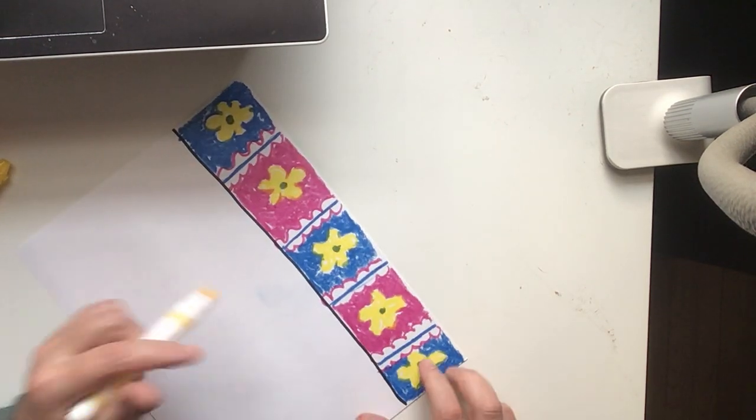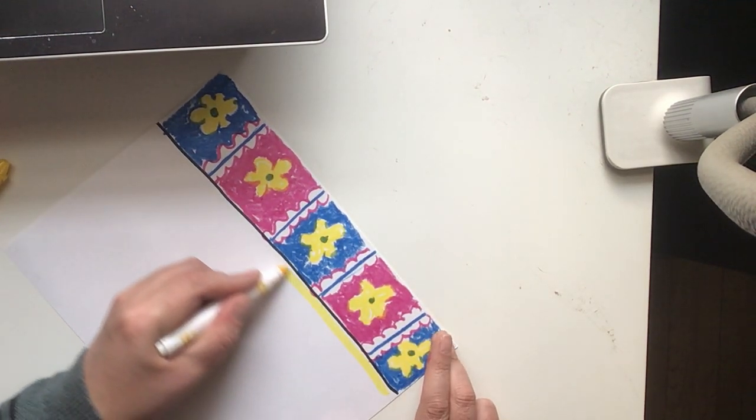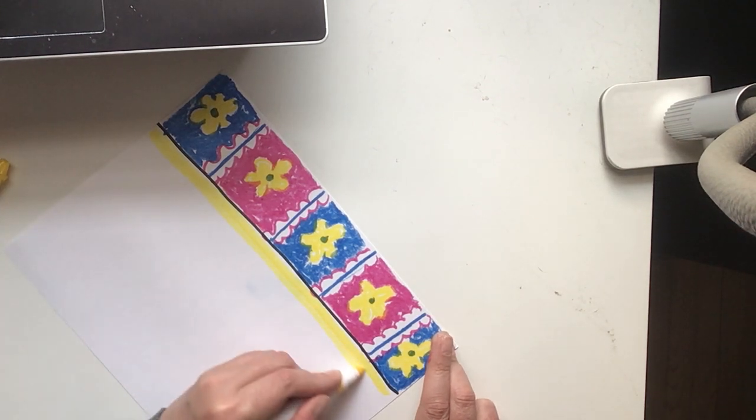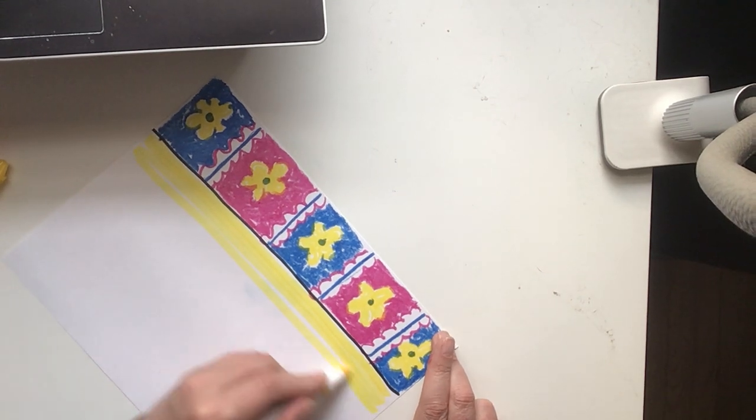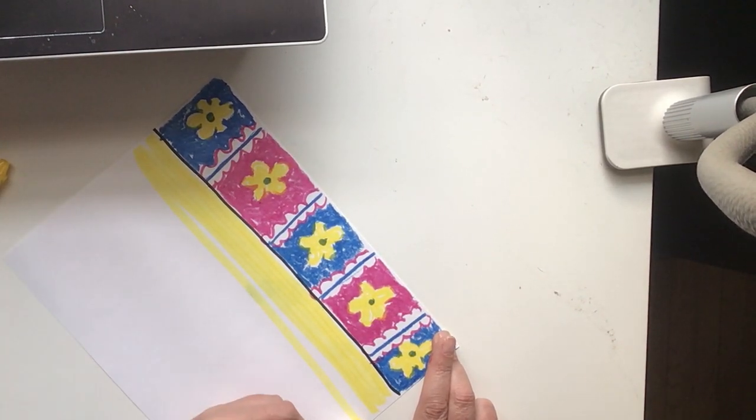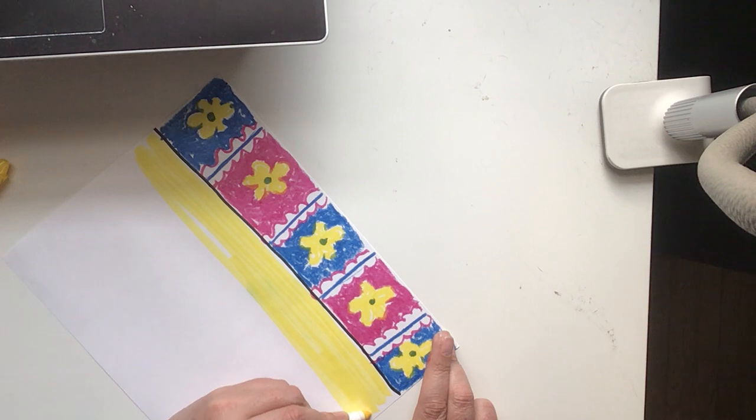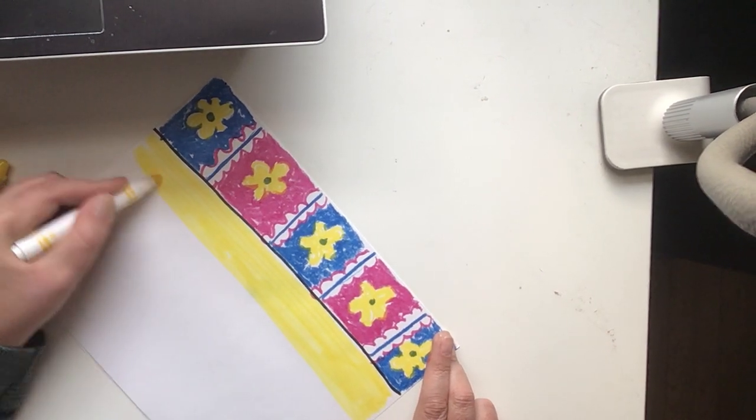I'm going to color in all of this empty white space with yellow, and I'm trying to do this as neatly as possible. I want to get all of this space colored in.